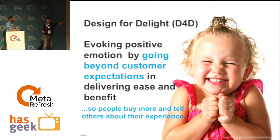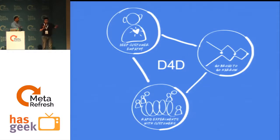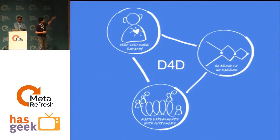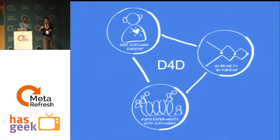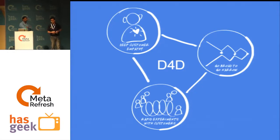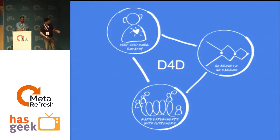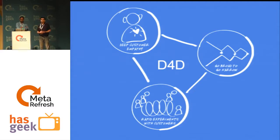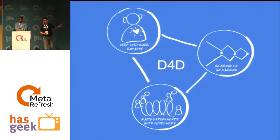There are three pillars of this approach. The first and most important is customer empathy — understanding your customers deeply. The second is ideation: going broad then going narrow. The third, which many of you are already well aware of, is going lean — iterative experiments to understand what really works. I'll quickly talk through these three concepts and then hand over to Vivek.